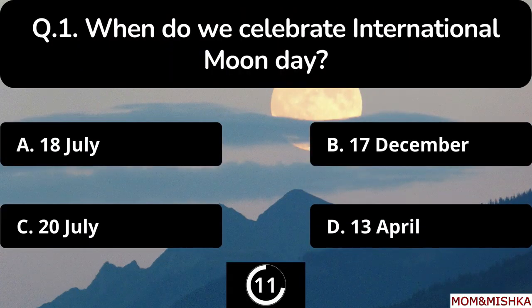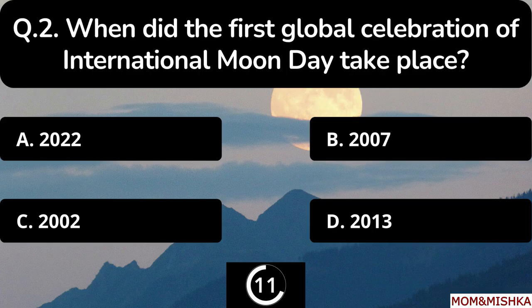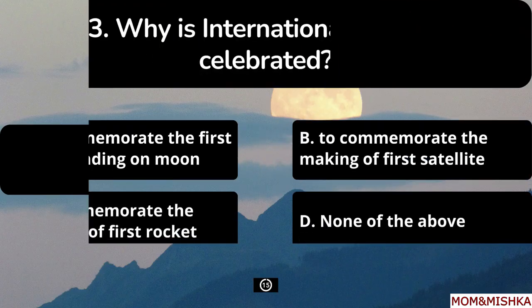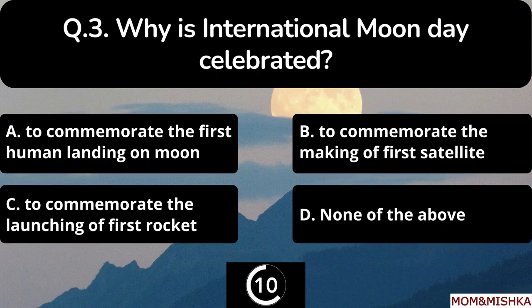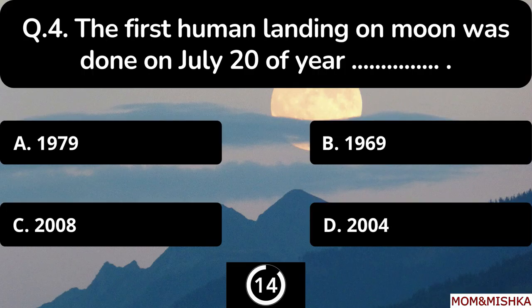When do we celebrate International Moon Day? The correct answer is option C: 20th July. When did the first global celebration of International Moon Day take place? It's in year 2022, option A. Why is International Moon Day celebrated? The correct answer is option A: to commemorate the first human landing on the moon.